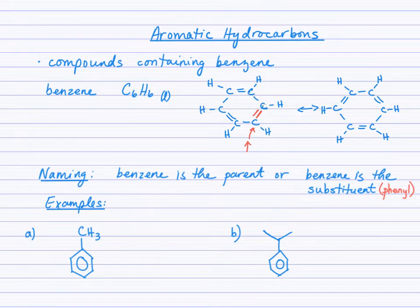All right, so now each carbon has a stable octet, and we see alternating double and single bonds.